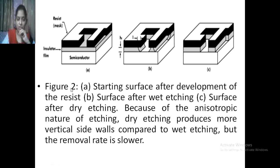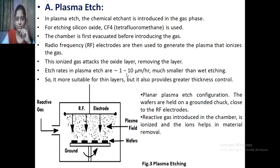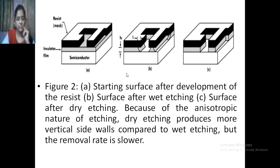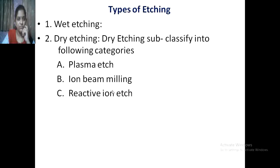Referring back to the figure, this is the starting surface after development of the resist. In wet etching, sloped sidewalls are produced, whereas in dry etching, vertical sidewalls are produced. However, the dry etching process is slower and wet etching is the faster one.